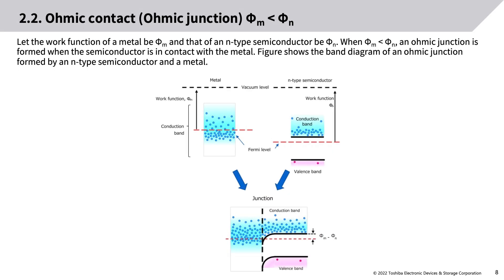Ohmic contact — ohmic junction (Phi_M < Phi_N): Let the work function of a metal be Phi_M and that of an N-type semiconductor be Phi_N. When Phi_M is less than Phi_N, an ohmic junction is formed when the semiconductor is in contact with the metal.